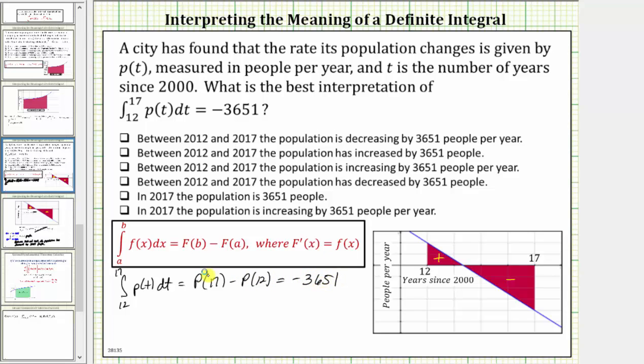Now remember, big P is the antiderivative of little p, and little p is the derivative of the population function, or we can say the derivative of big P of t is equal to little p of t, which means big P is the population function.